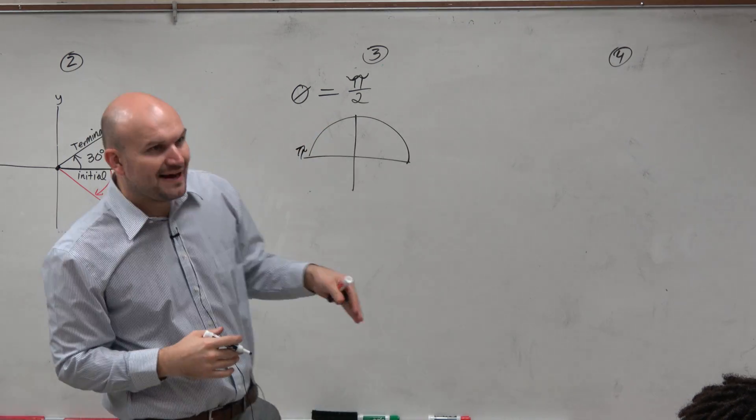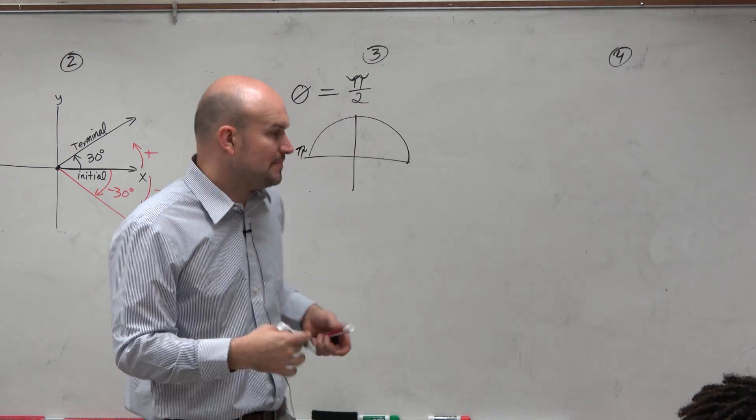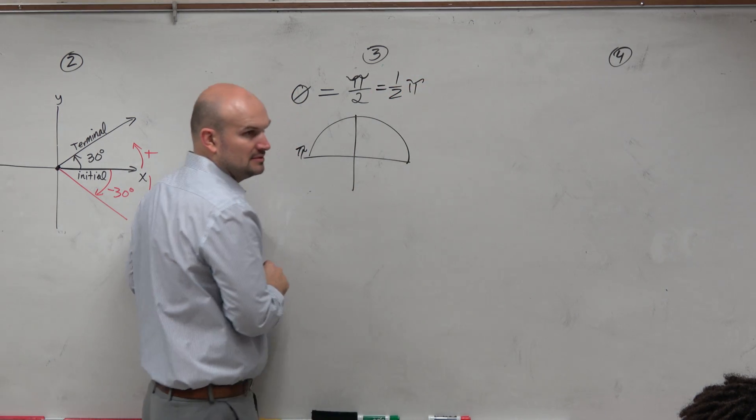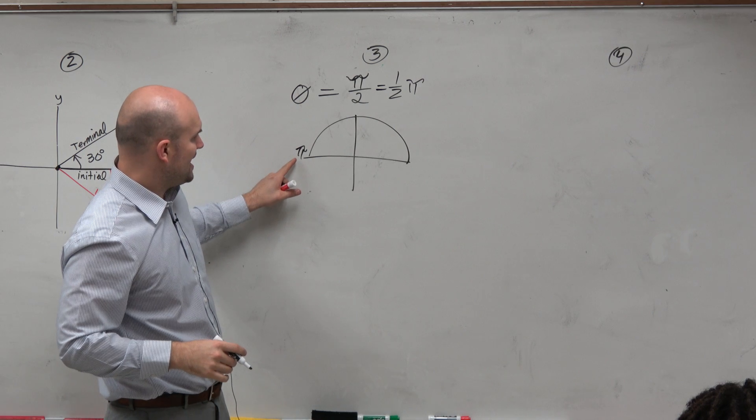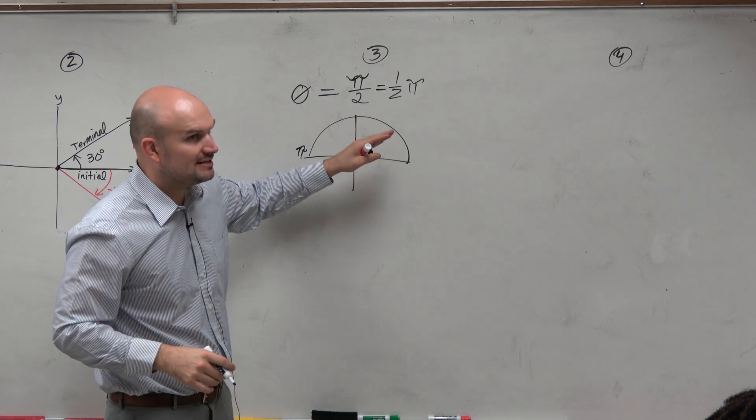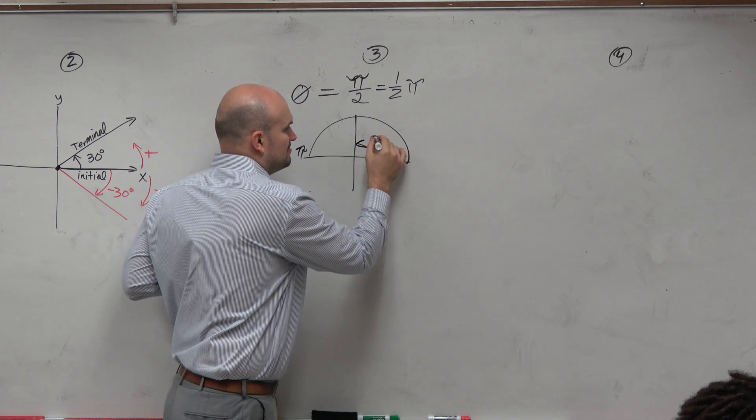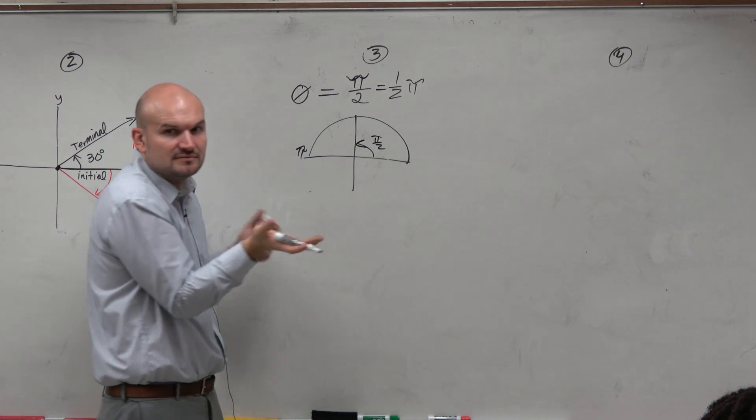Now, pi halves might be a little confusing for you at first. So we can just represent that as one half of pi. So you say, oh well, from here to here is pi. Then just half of that is pi halves. So that is pi halves, right? Half of the measurement.